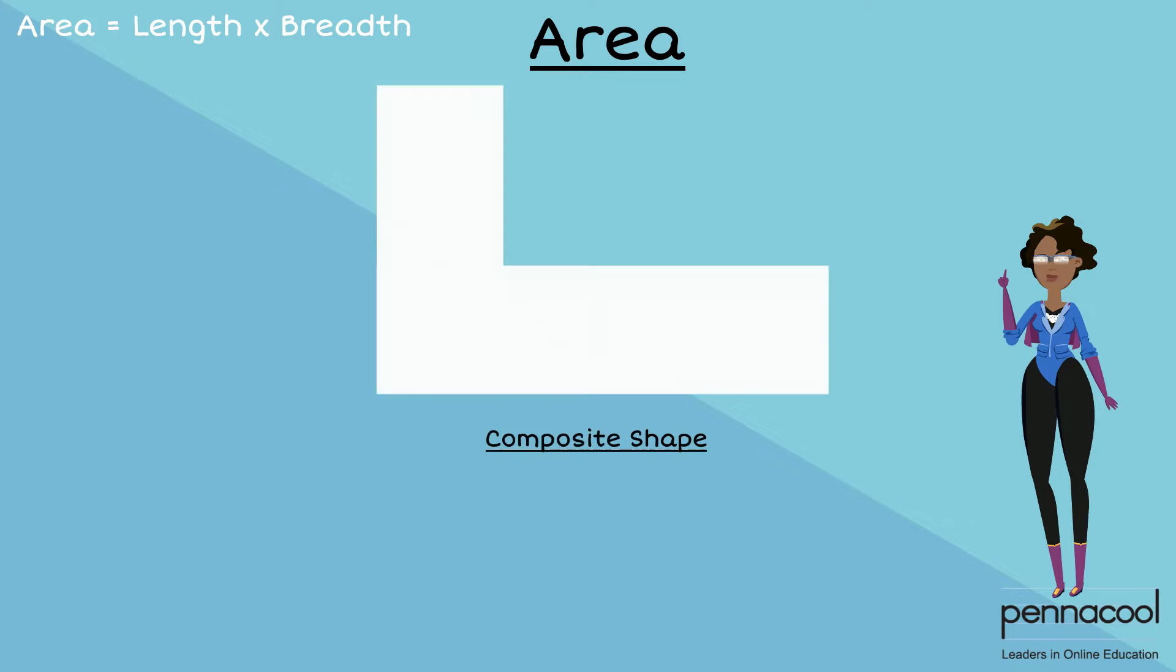We can use the formula above to help us determine the area of composite shapes. We can split them up into squares and rectangles and combine their areas. For example, when looking at the following shape, we can split it into two rectangles.